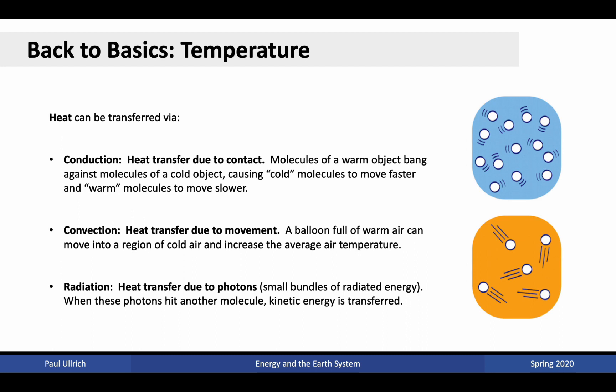The second way heat can be transferred is via convection — heat transfer due to movement. If we have a fairly cold room and release a balloon full of warm air into it, the average air temperature of the room increases. The convective process is very common in the atmosphere and is associated with rising bubbles of warm air. If a bubble of warm air near the surface rises up through the atmosphere, it carries energy higher up into the atmosphere.